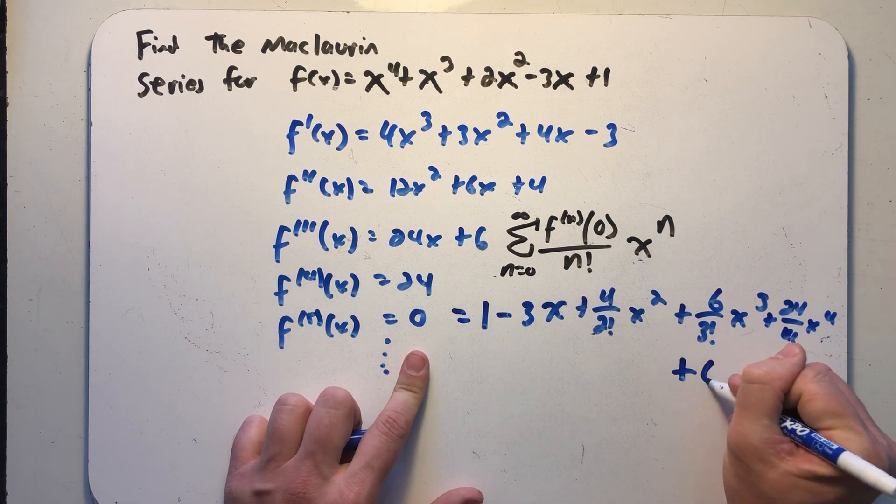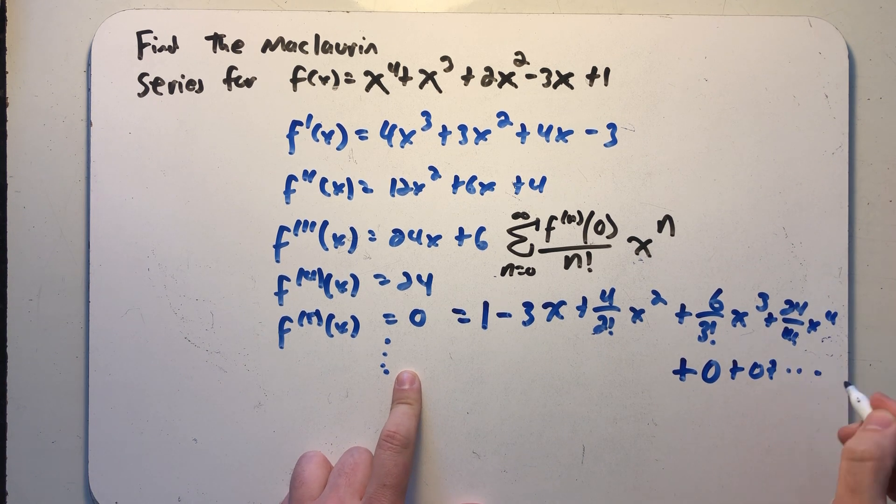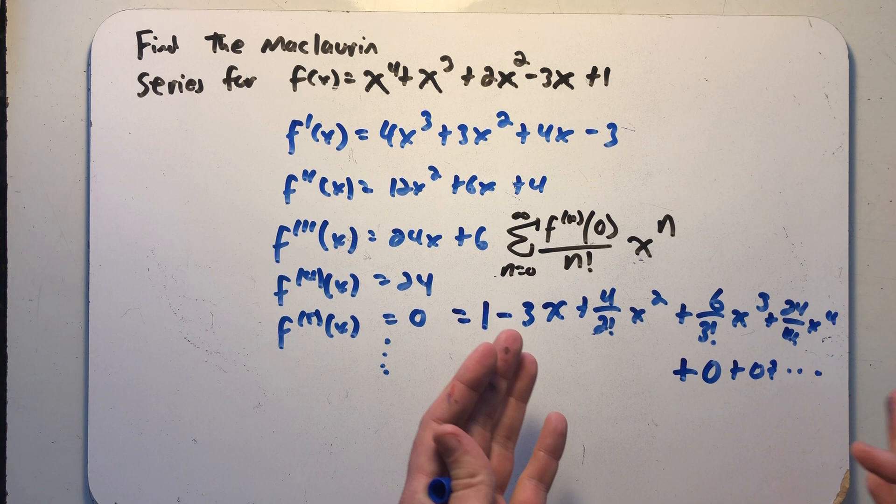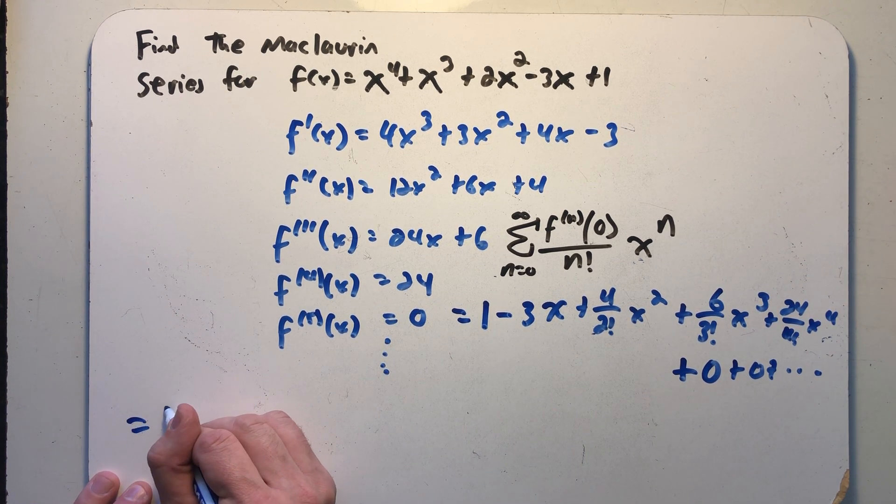Fifth derivative plus, well, zero. Sixth derivative plus zero plus, I would keep adding zeros. This series would tell me just to keep adding zeros. So what do I actually have for the series?